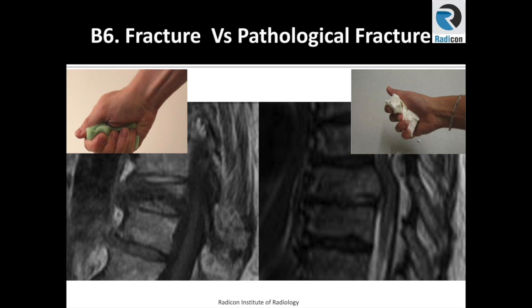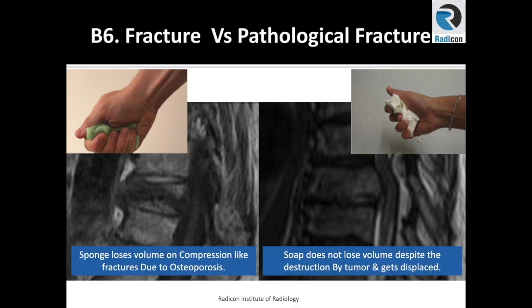A good way to differentiate between osteoporotic fractures and pathological fractures is to think of them as a sponge or a butter bar or soap bar. The sponge is hollow with lack of mineralization and can collapse easily without any volume shift. However, a butter bar or soap bar can lose its shape and get distorted, but it does not lose its volume — the volume merely transfers to another place, most often into the spinal canal, and can cause compression of the nerve roots or cord itself.